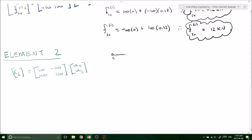our node 2 looks something like this. We have our k2 and we have a displacement at u2 and a displacement at u3. And we already know from a previous video that u2 is 0.1204.